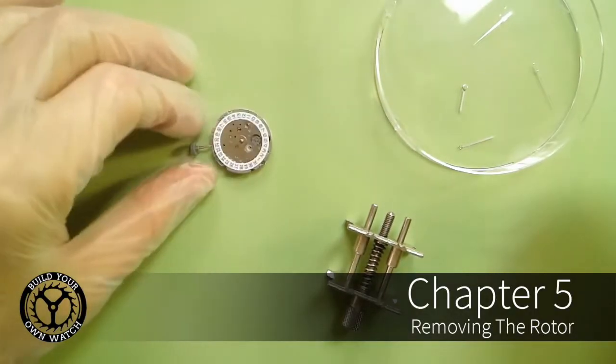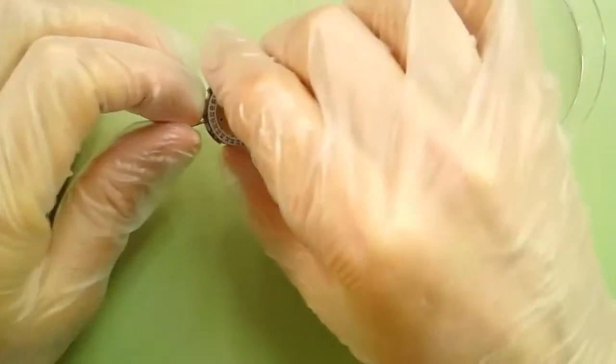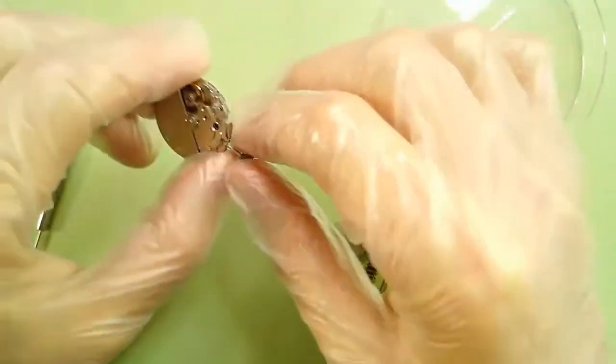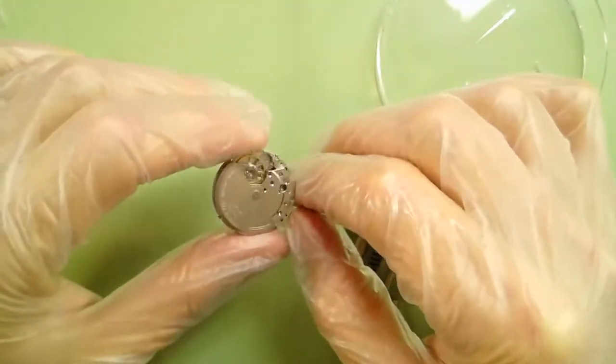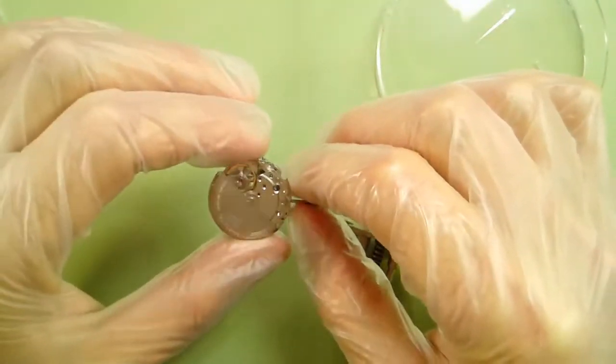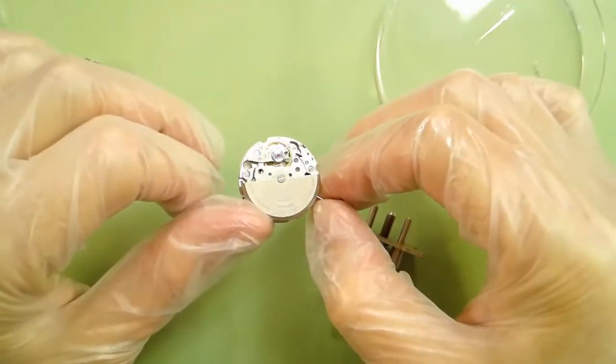Okay, so now that we have our dial feet screws installed, we can get to the next step which is de-energizing the balance wheel, or really just de-energizing the mainspring because right now my balance is moving because I wound it up.